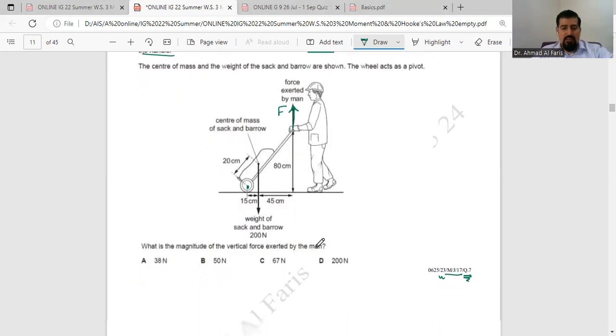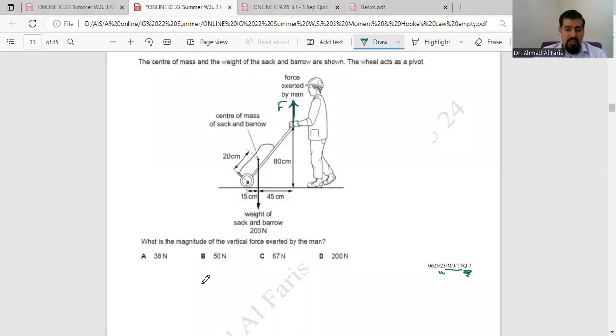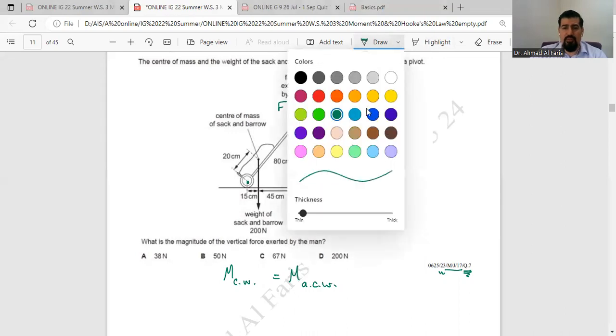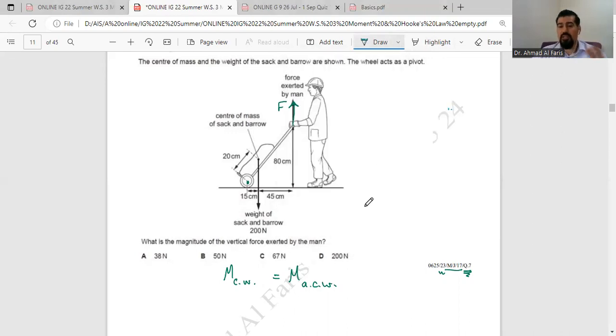What is the magnitude of the vertical force exerted by the man? Now we know that moment clockwise is supposed to be equal moment anticlockwise since it is stationary. And if we look here back to the direction of the forces, it's very important to realize that when we talk about moment, we are talking about force multiplied by perpendicular distance. When we talk about perpendicular distance, that means we are talking about the line of action of the force with the distance to the pivot. This is the perpendicular distance, 90 degrees.